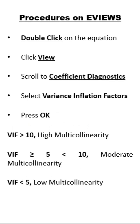The Variance Inflation Factors (VIF) detect the presence of multicollinearity in a model. The procedure in eViews is: first, double-click on the equation, then click View, scroll to Coefficient Diagnostics, and select Variance Inflation Factors, then press OK. If our VIF is greater than 10, that is an indication of high multicollinearity. If our VIF is between 5 and 10, we have moderate multicollinearity. If our VIF is less than 5, we have low multicollinearity.